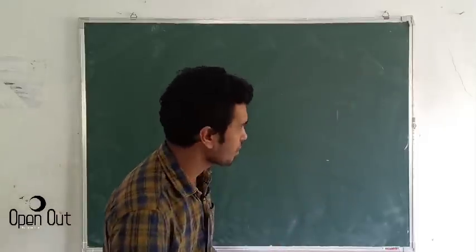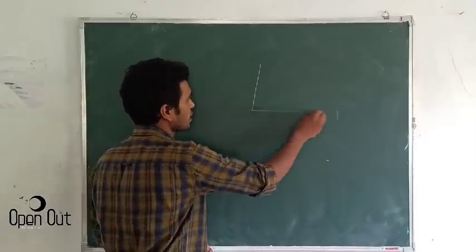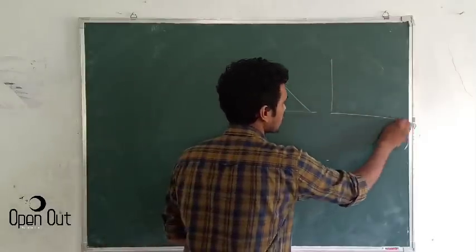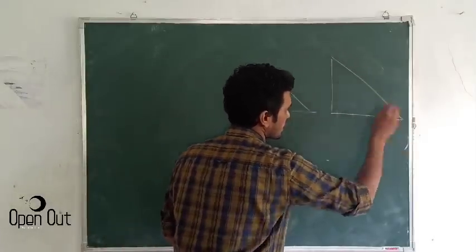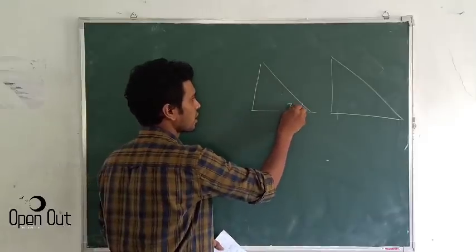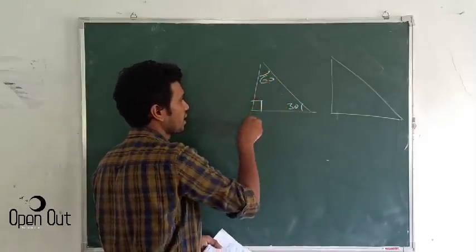Let me tell you about two triangles. I have two triangles. You see one of the triangles is a 30-60-90 triangle.